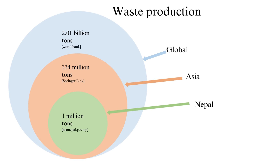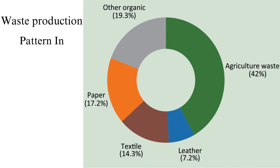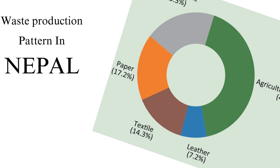We produce around 2.01 billion tons of waste globally and 334 million tons of waste in Asia. From Nepal, we have 1 million tons of waste generated each year. In Nepal, almost 70% of the waste is organic and only 19.3% of waste is inorganic.